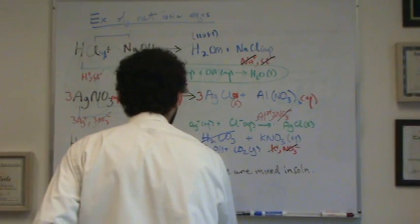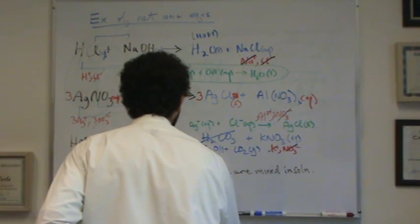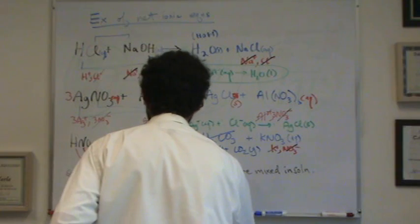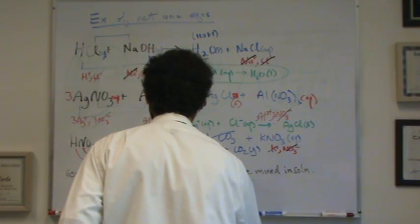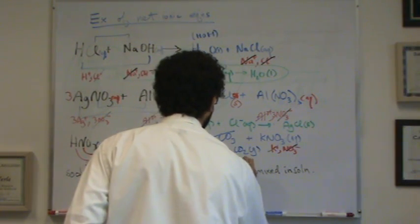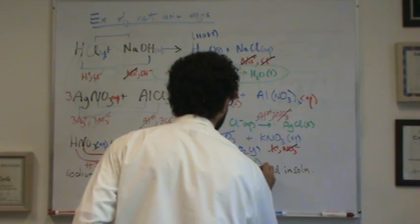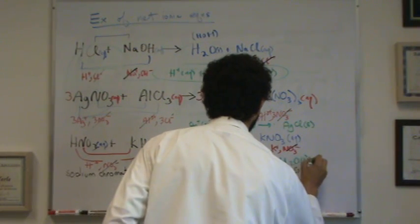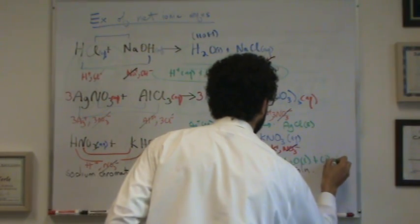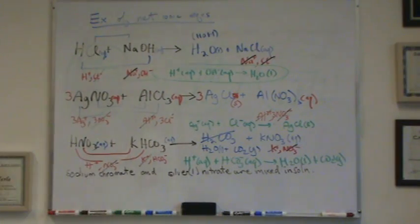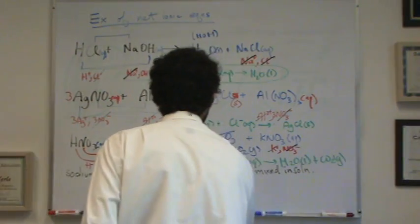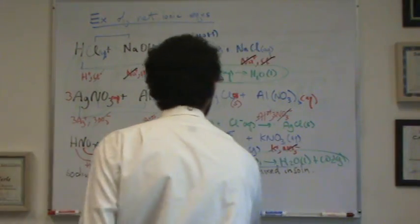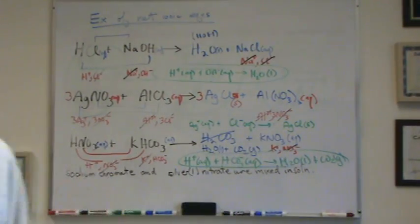I'll write that in green. I have H plus aqueous. Remember anything with a charge is going to be aqueous automatically. HCO3 minus aqueous goes to H2O liquid plus CO2 gas. And there we go. We've got our net ionic equation right here. Got rid of all the spectators. That's what's actually doing the reaction.